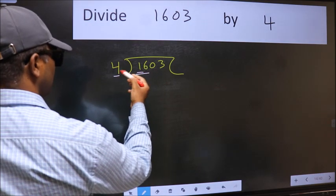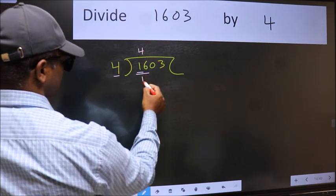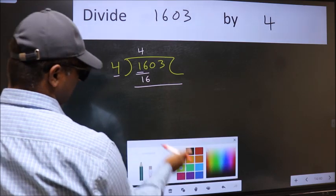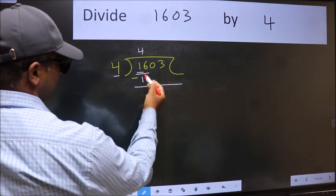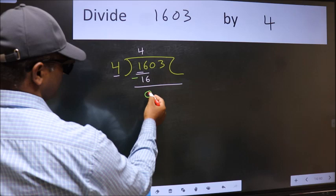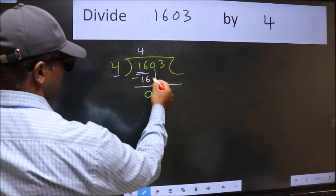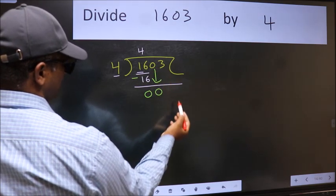When do we get 16 in 4 table? 4 4s 16. Now, we should subtract 16 minus 16, 0. After this, bring down this beside number. So, 0 down.